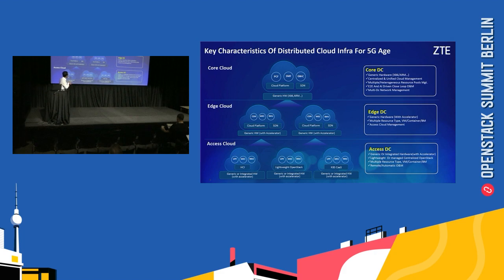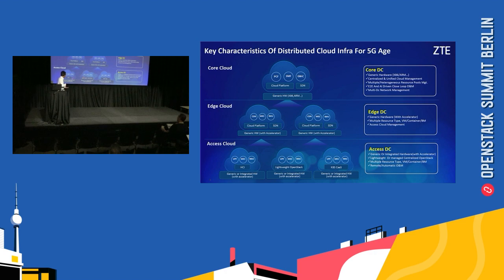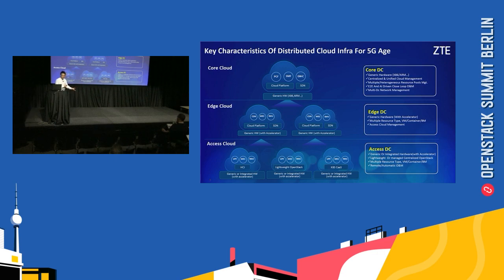For example, in the core cloud you deploy PCF, SMF in 5G, and your gateway control plane. We also have edge data centers and access data centers. The access data center is closest to subscribers, providing the lowest latency and best bandwidth — deploying elements like cloud RAN control plane, multi-edge access control services, and UPF, the packet plane in 5G.